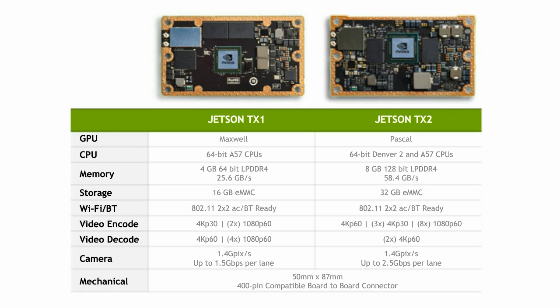TX2 has a hex-core CPU complex comprised of a quad-core ARM A57 in addition to NVIDIA's own Denver 2 CPU, whereas the TX1 just has the quad-core A57. TX1 has four gigabytes of RAM and 16 gigabytes of eMMC, whereas TX2 has eight gigabytes of RAM and 32 gigabytes of eMMC. They both have Wi-Fi and Bluetooth. TX1 can do 4K at 30fps encode, whereas TX2 can do 4K at 60fps encode. Otherwise, they have the same form factor and pin-to-pin compatible board connector.